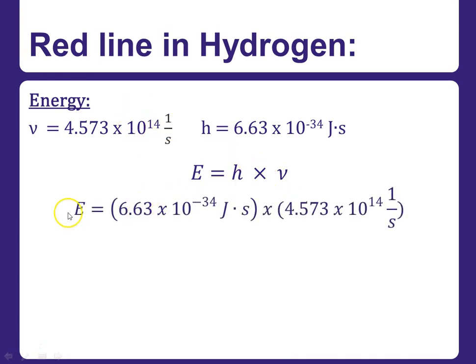And then we've got to plug it in. And so E is equal to here's Planck's constant times here's that frequency. I know the numbers are weird, but we're just plugging numbers into an equation. And so then we're going to cancel out seconds times 1 over seconds goes away. And so now we have our E.